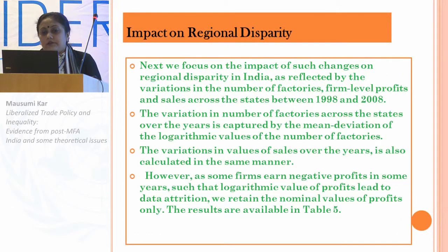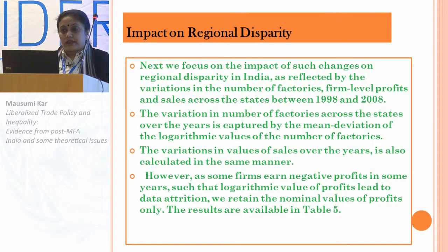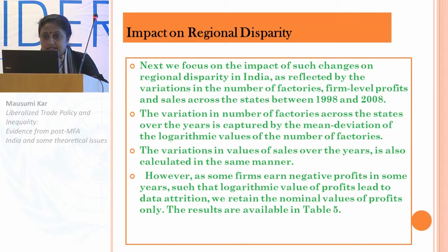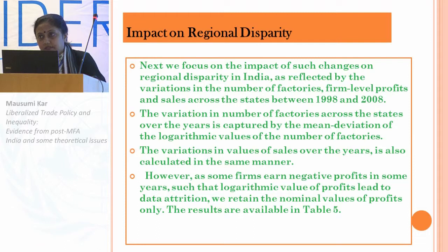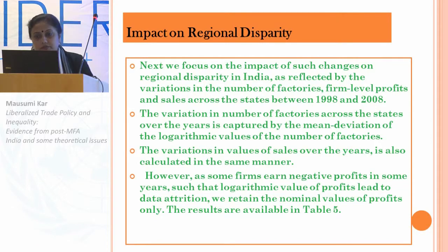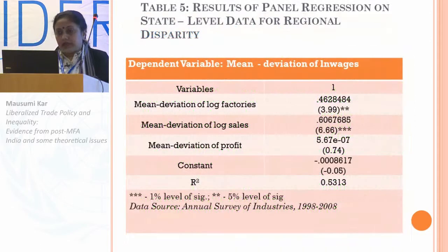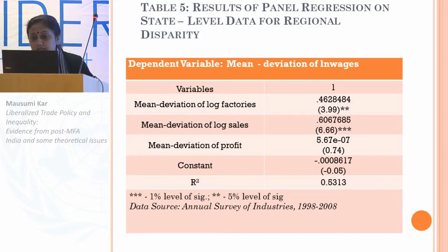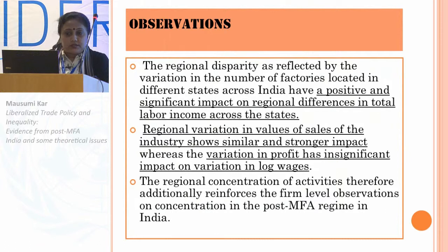Next, we show the impact on regional disparity, which is reflected by variations in the number of factories, variation in firm-level profit, and variation in sales across states between 1998 and 2008. The variation is captured by the mean deviation of the logarithmic values of number of factories and sales values. Since some firms earn negative profits in some years, we could not take logarithmic values of profits due to data attrition, so we have taken nominal values of profits only. Results shown in Table 5 indicate that the mean deviation of logarithmic values of wages has a strong positive relation with the mean deviation of logarithmic values of number of factories and number of sales. It also has a positive relation with profit, but that is not so significant.